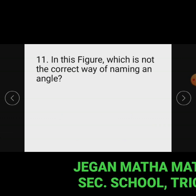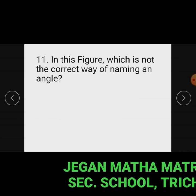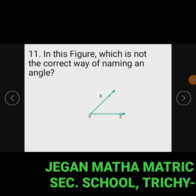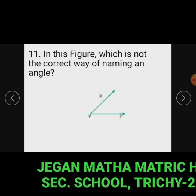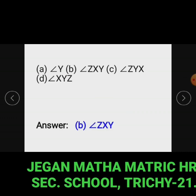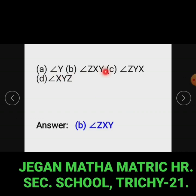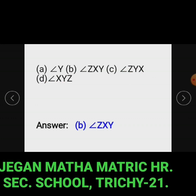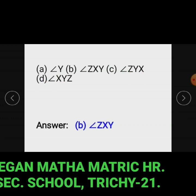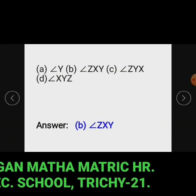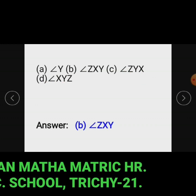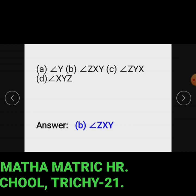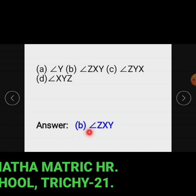Objective type questions. In this figure, angle XYZ is given. The options are: option A — angle Y, option B — angle ZXY, option C — angle ZYX, option D — angle XYZ. Options A, C, and D correctly represent angle Y, but option B does not represent angle Y. So option B is the wrong answer. Answer: option B, angle ZXY.